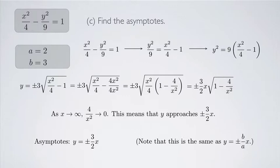Note that this is the same as y equals plus or minus b over a times x, and you can just use that formula if you want. But keep in mind, if your hyperbola is oriented the other way, the formula is y equals plus or minus a over b times x. Also, if you're going to graph the hyperbola on a calculator, you'll need to solve for y anyway, so this approach helps both with avoiding formula memorization and with graphing.